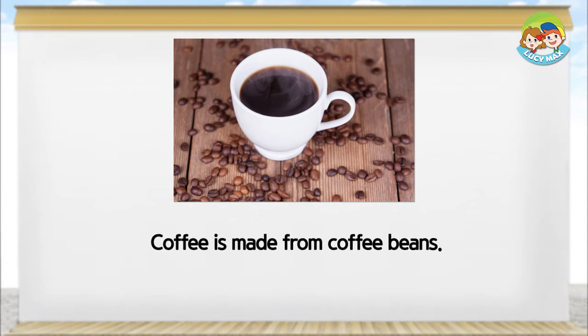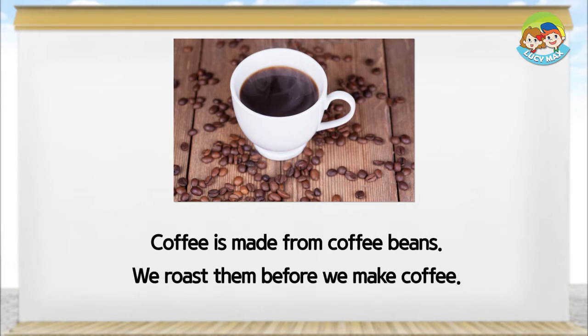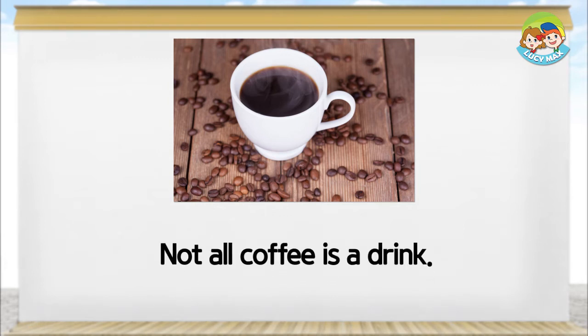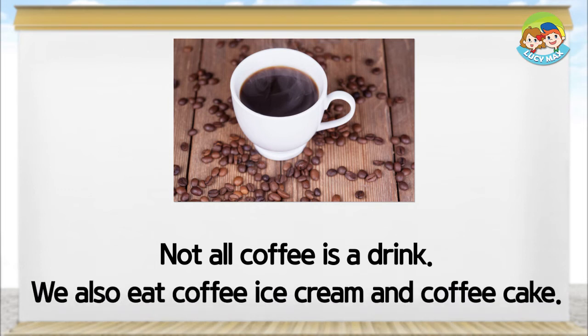Coffee is made from coffee beans. We roast them before we make coffee. The little brown things in the picture are roasted coffee beans. Not all coffee is a drink — we also eat coffee ice cream and coffee cake.